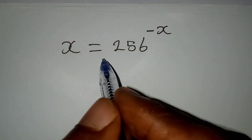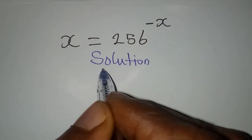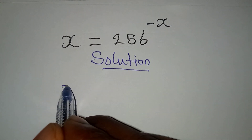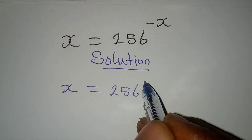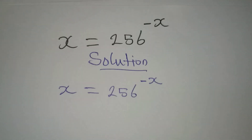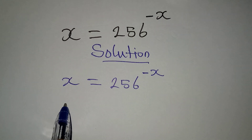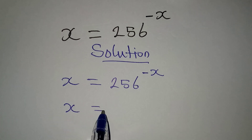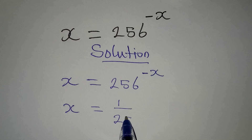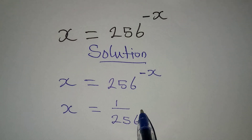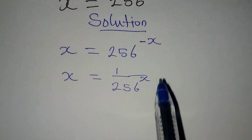Let's solve this problem quickly. The equation is x = 256 to the power of negative x. The first step is to rewrite this: x = 1 over 256 to the power of x, eliminating the negative exponent.